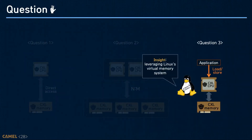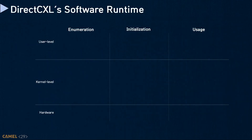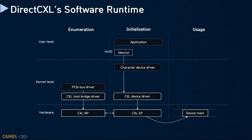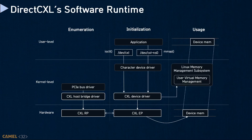To expose CXL-attached memory space to the user, we leverage the Linux memory management system. The software runtime of DirectCXL consists of an enumeration phase, initialization phase, and usage phase. When the Linux PCI bus driver performs enumeration, our CXL host bridge driver discovers CXL memory devices. Remote memory of each CXL memory device is mapped to the system so the CPU can issue memory requests to the remote memory. Our CXL memory device driver is loaded after enumeration, and the driver exposes a character device to interact with user-level applications. Users can create a namespace through IOControl and perform enumeration on the namespace device to use the CXL-attached memory space. The enumeration handler maps the physical address space of remote memory into the user's virtual memory address space, so the user can issue load-store instructions to access CXL-attached remote memory.